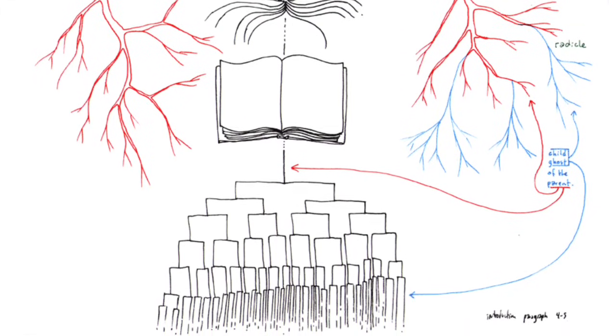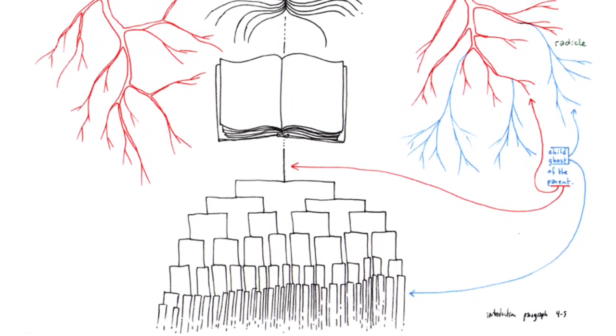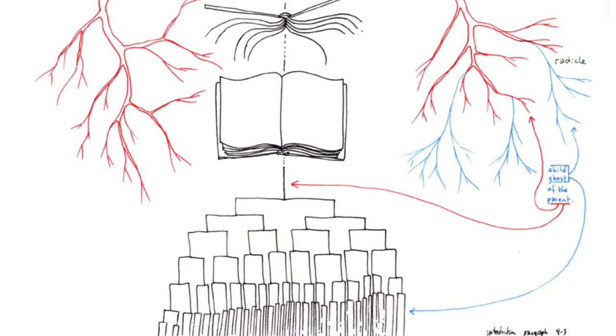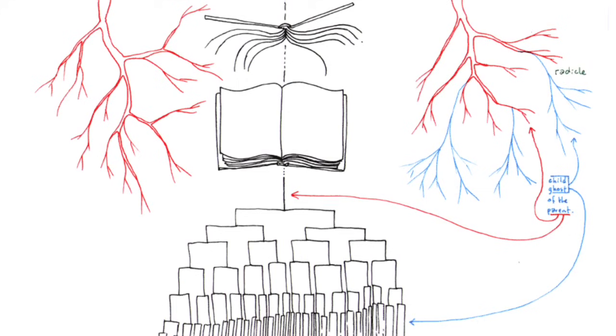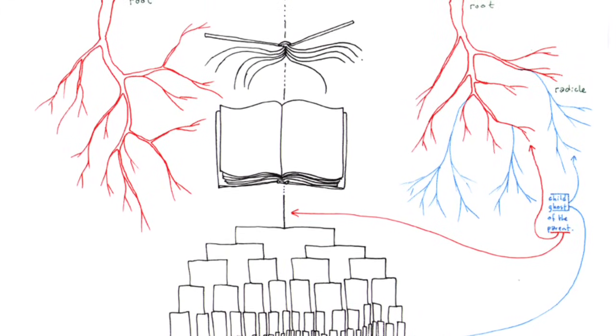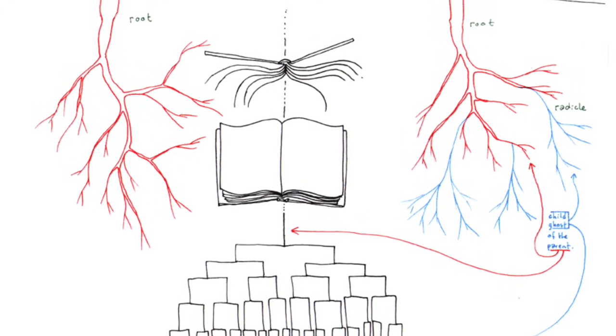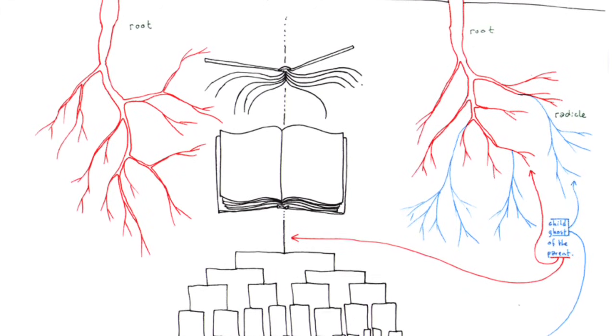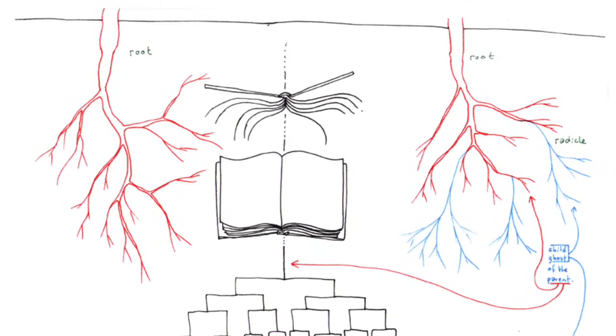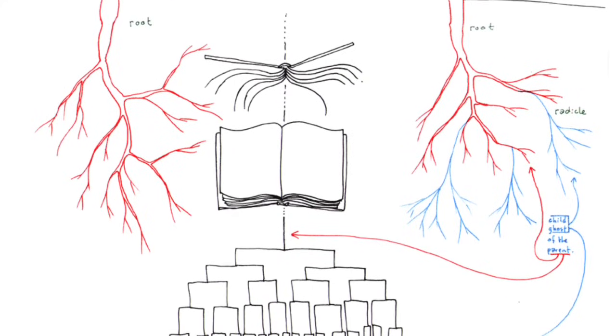In all of their functions of shelter, supply, movement, evasion, and breakout. The rhizome itself assumes very diverse forms. From ramified surface extension in all directions, to concretion into bulbs and tubers. When rats swarm over each other. The rhizome includes the best and the worst. The potato and the couch grass, or the weed. Animal and plant. Couch grass is crab grass. We get the distinct feeling we will convince no one. Unless we enumerate certain approximate characteristics of the rhizome.